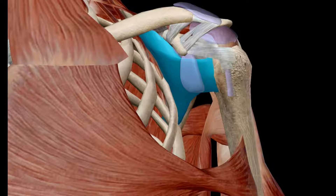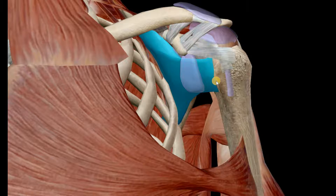The origin is the subscapular fossa, the insertion is the lesser tubercle of the humerus. The innervation is provided by the upper and lower subscapular nerves. The action is medial rotation of the head of the humerus and prevention of anterior displacement of the humerus. The blood supply is the subscapular artery.